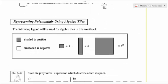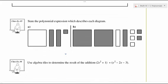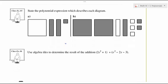You've seen algebra tiles before. We're going to use them to help us with polynomials, but we first have to define them. A small square is one. The rectangle of unknown length is x. The large square is x squared. In class exercises five and six: tell me what polynomial expressions these diagrams describe, then use algebra tiles to determine the result of the addition question.